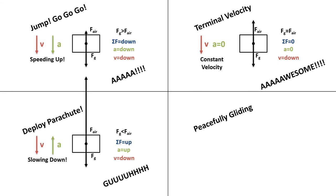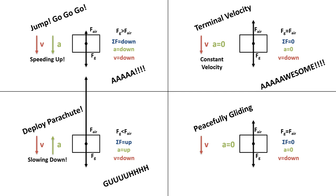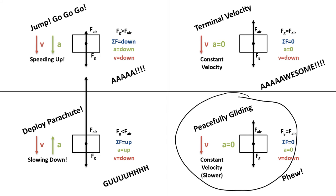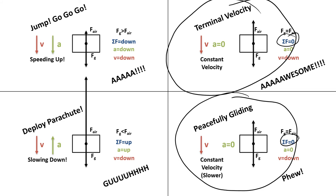Then you're peacefully gliding, enjoying the scenery with your parachute deployed. You still have your weight, but now it's equal to your air resistance, so you move downward at a constant velocity. Weight equals air resistance, net force is zero, you're no longer accelerating — you're still moving downward, but much slower. Then you land safely. That's an example of moving downward while still being in equilibrium because the net force is zero.